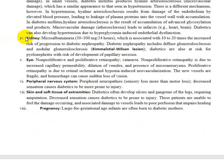The kidney can also be affected, leading to diabetic renal failure. In diabetic nephropathy, glycosylation of the kidney vessels causes the pores of the glomerulus to increase, allowing proteins to pass through the glomerular wall. This causes nephrotic syndrome with diabetic nephropathy, including diffuse glomerulosclerosis. Diabetics are also at risk for pyelonephritis with risk of development of papillary necrosis.